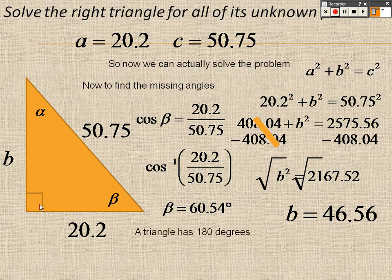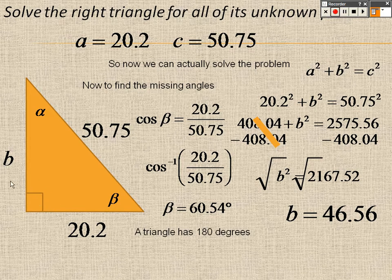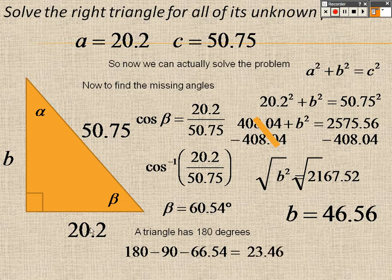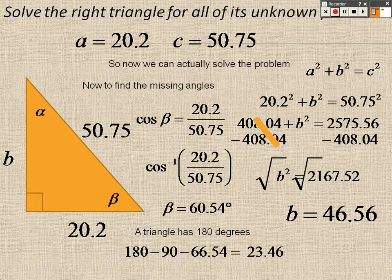So now, if a triangle has 180 degrees, 90 minus 60.54 from that 180, I've got 23.46 degrees left over.